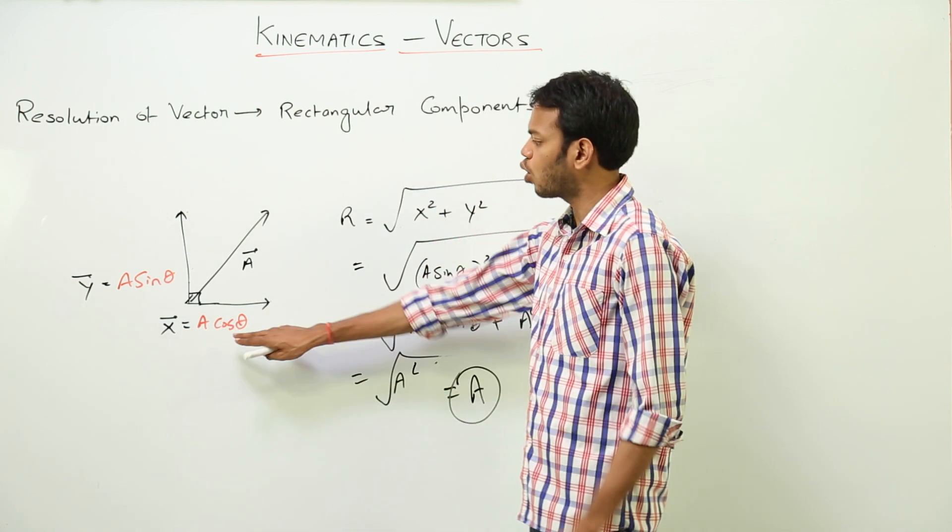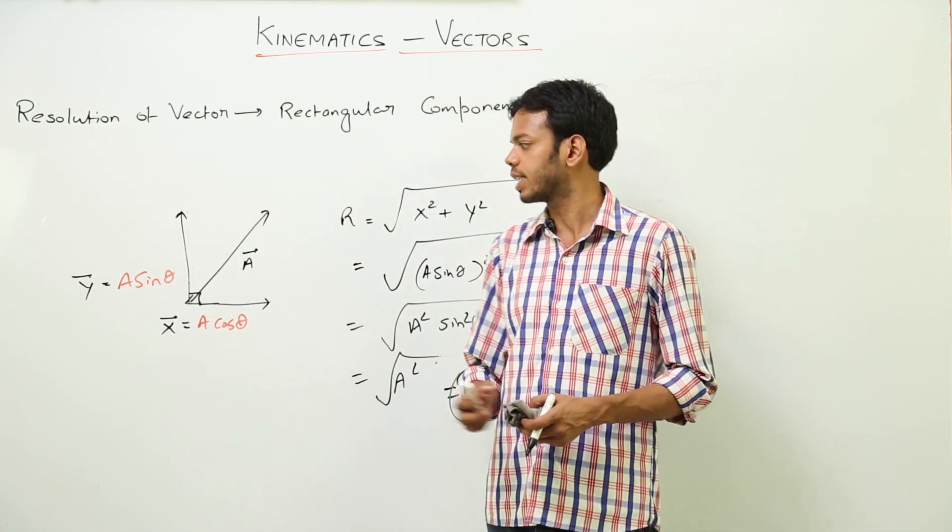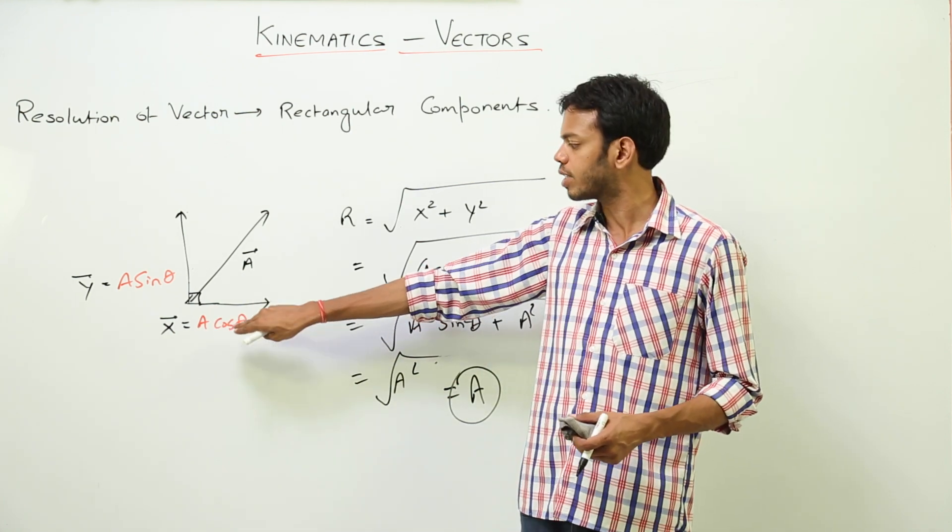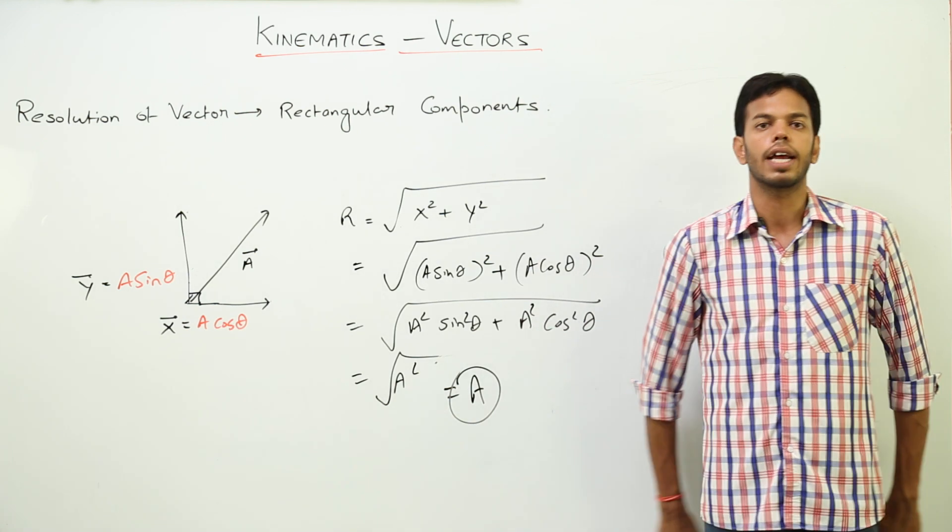So these two are called rectangular components. Rectangular means along X and Y axis. Along X direction, that is along horizontal, this is cos theta. Along vertical, this is sin theta. This is how you resolve a vector into rectangular components.